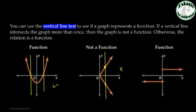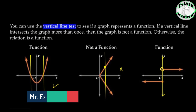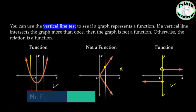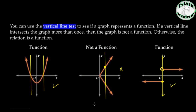For the last one, if you draw a vertical line, you can find that the first point is open, meaning this point is not included in the graph. But the second point is closed, meaning it is included. So this relation will be a function.